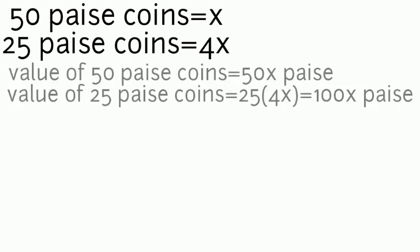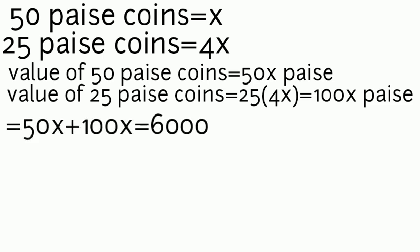The value of 50 paise coins is 50x paise. The value of 25 paise coins is 25 × 4x = 100x paise. According to the given condition, 50x + 100x = 6000. So 150x = 6000.